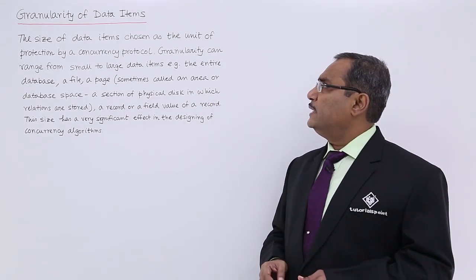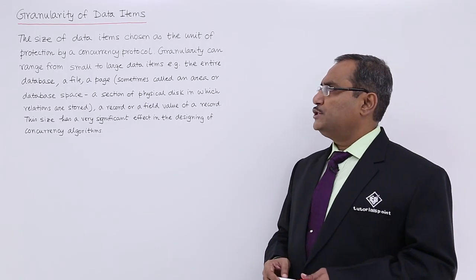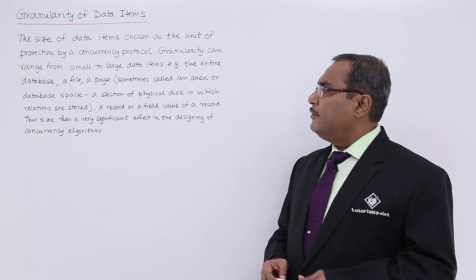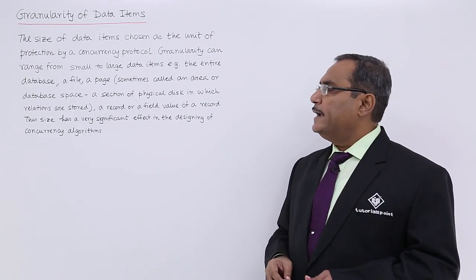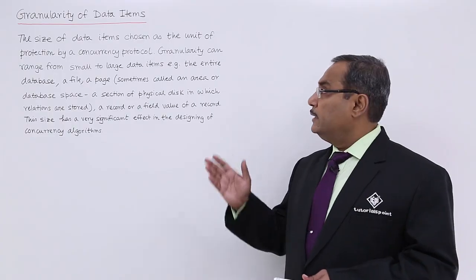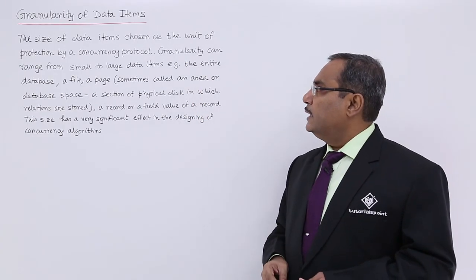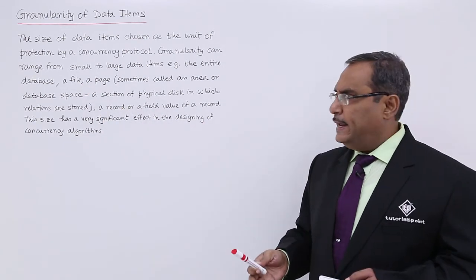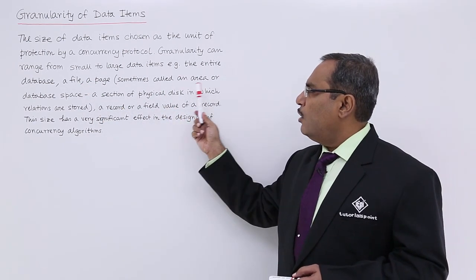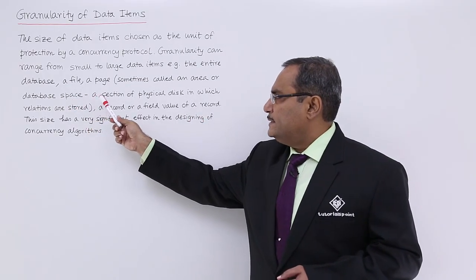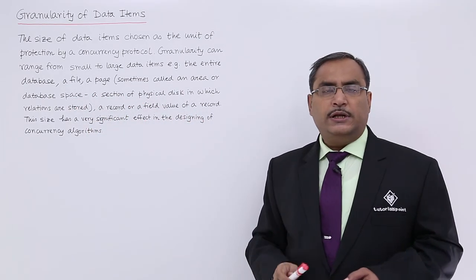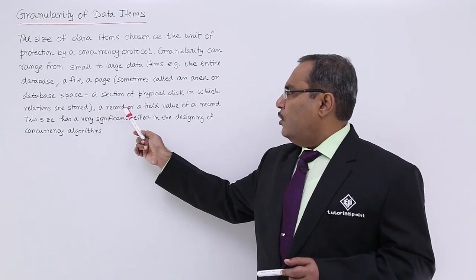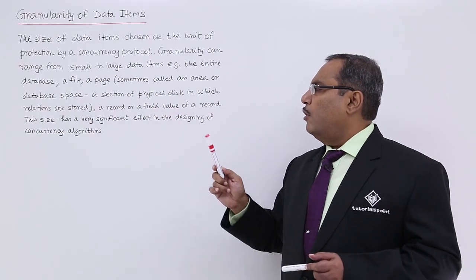The size of data items chosen as the unit of protection by a concurrency protocol — that is granularity. Granularity can range from small to large data items: the entire database, a file, a page (sometimes called an area or database space), a section of the physical disk where relations or tables are stored, a record, or a field value of a record.